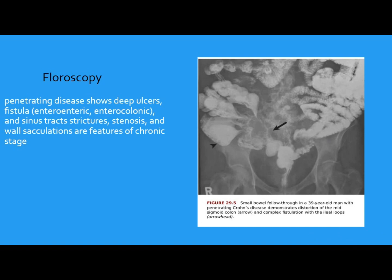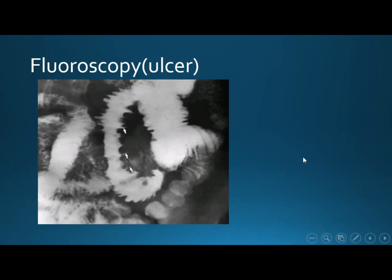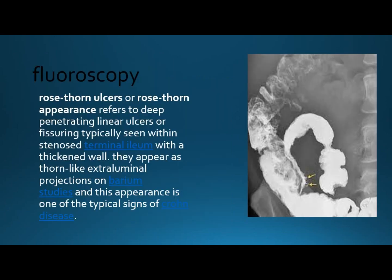In the acute penetrating phase, we have deep ulcers that become sinuses and fistulas. This is a barium follow-through showing distortion of the small bowel. There is wall thickening separated from the internal lumen of the bowel, sinus tracts, and dilation. This shows how ulcers appear on barium as spike projections — this is the Rosthron ulcer, like a spike coming out from the base. It is a typical sign of Crohn's disease, occurring mostly in the terminal ileum.